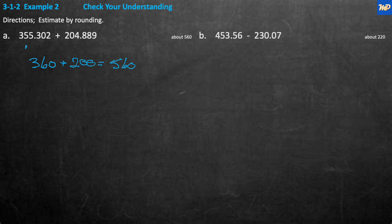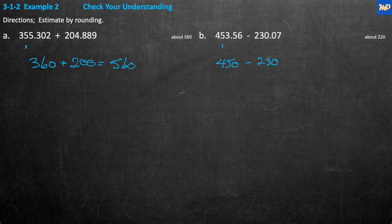B: 453.56 − 230.07. Rounding to the tens place — 453.56: the tens digit is 5, the ones digit to the right is 3, which is less than 5, so it stays 450. For 230.07: the tens digit is 3, the ones digit to the right is 0, which is less than 5, so it stays 230. So 450 − 230 = 220.